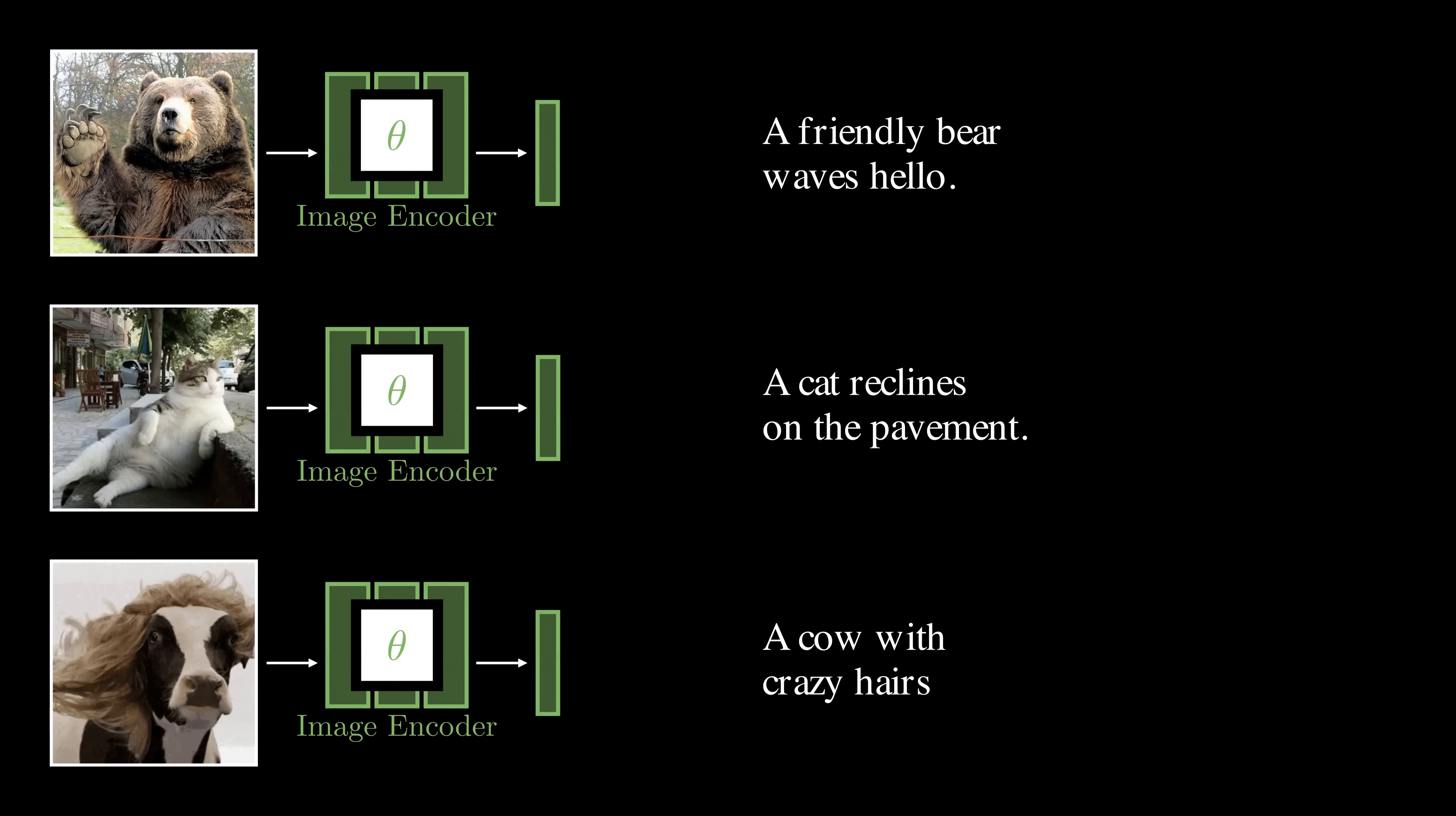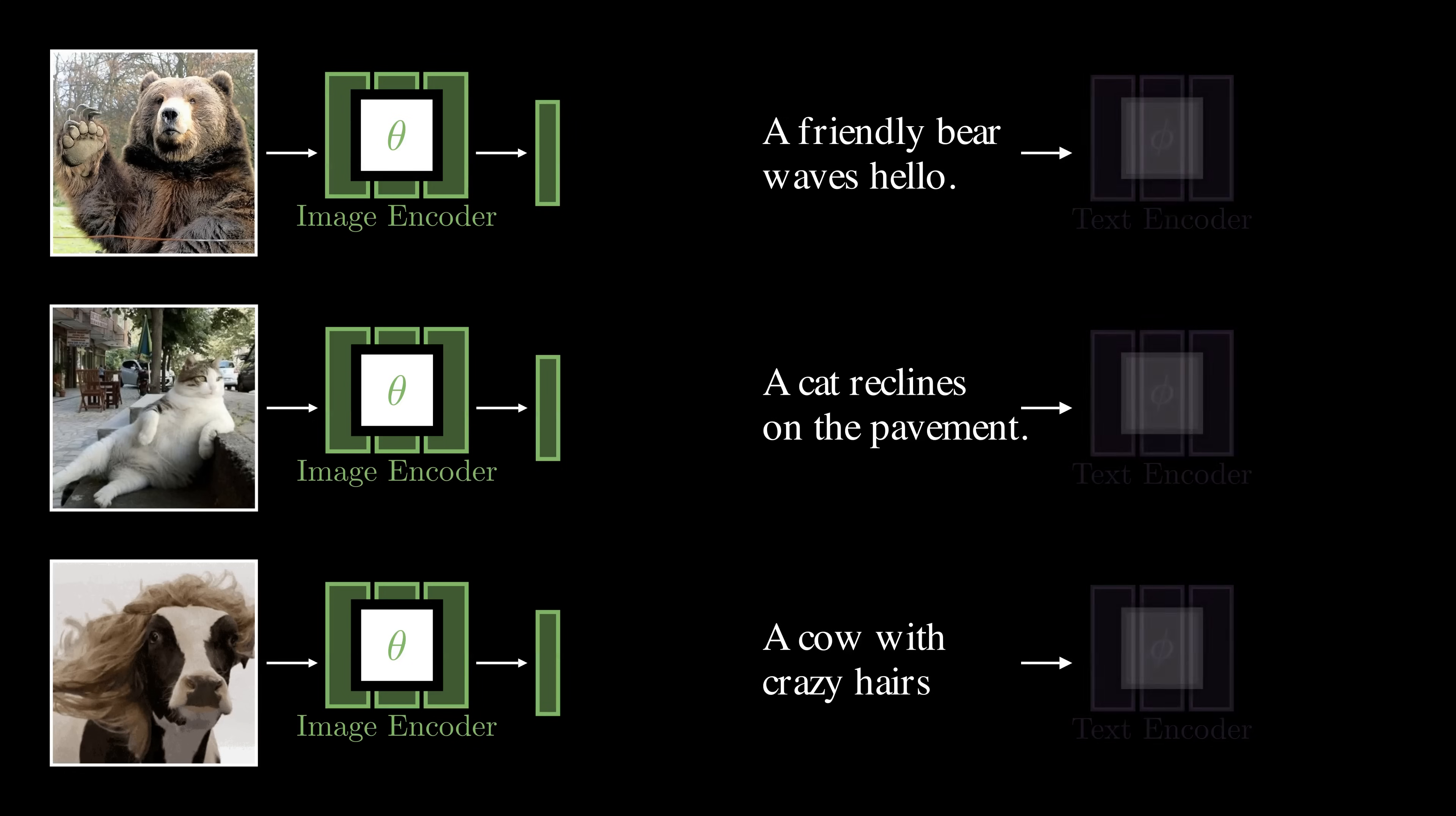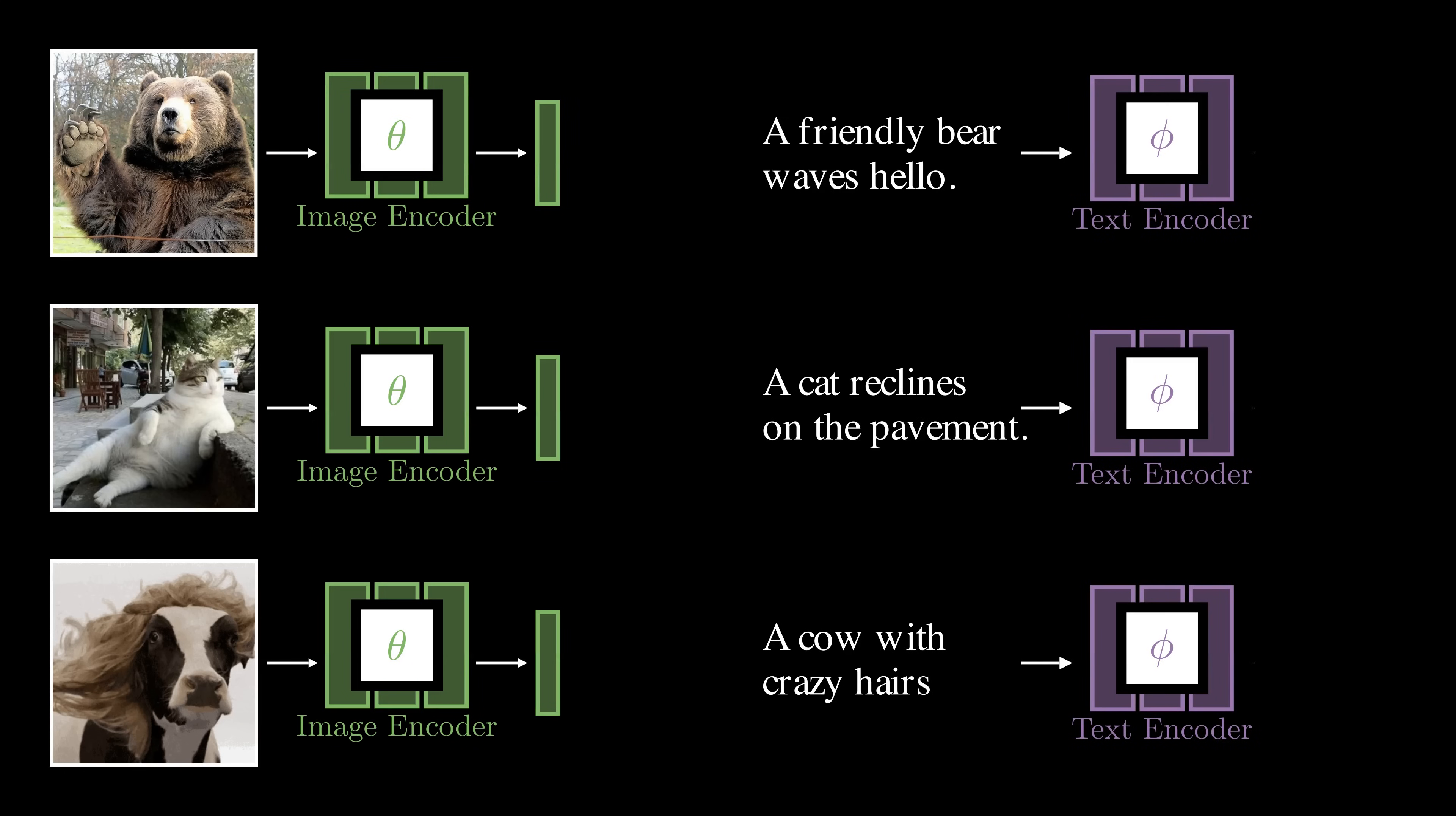For example, a caption might say, a friendly bear waves hello, or a cat reclines on the pavement. This tells us about objects, their actions, and scene. To use this extra information, we add a text encoder. The text encoder turns the caption or description into a feature vector, just like the image encoder does for the image.